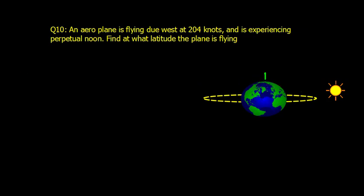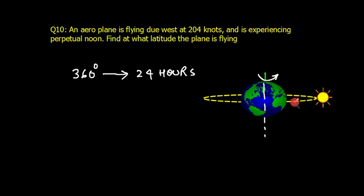We know that Earth rotates. Suppose this is the Earth, this is the axis. Earth rotates like this, 360 degrees in 24 hours. Obviously, the sun appears to be moving in the opposite direction. On the equator, the sun will appear to move in this direction.